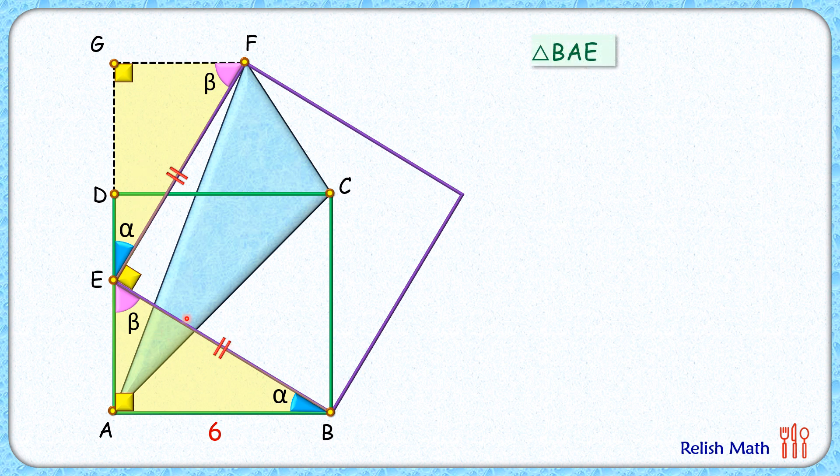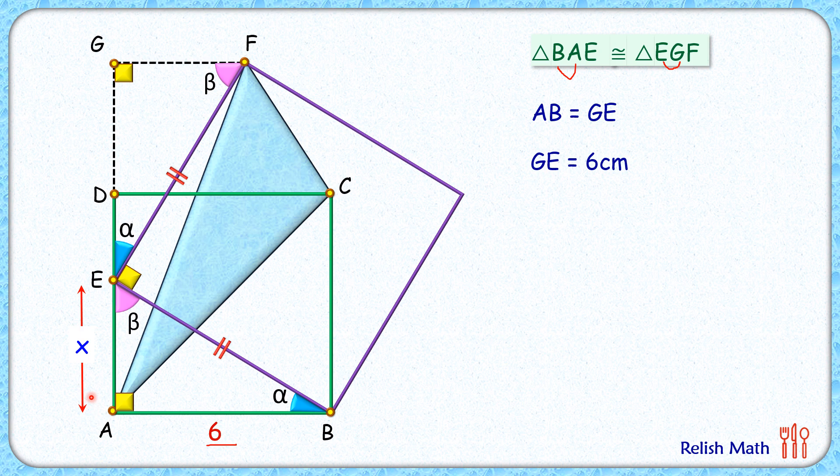As the triangles are congruent, the corresponding sides are equal. So we can say that AB length is equal to GE length. AB is 6 centimeters, so GE length is 6 centimeters. Let's assume EA is x centimeters.